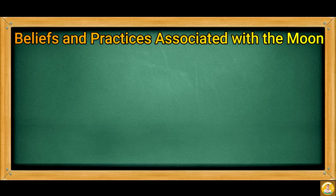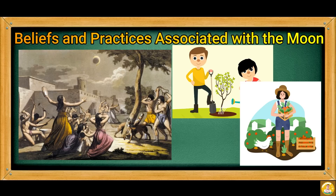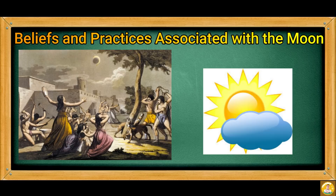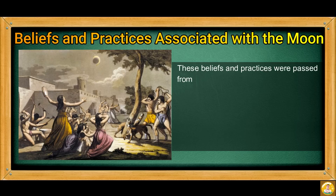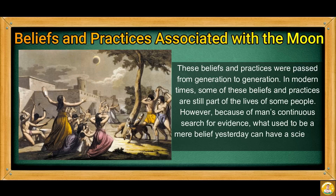We come now to the beliefs and practices associated with the moon. The phases of the moon are often associated with superstitious beliefs. During ancient times, people believed that the moon has a big influence on their lives. They used the moon as a guide — it told them when to plant and when to harvest, and also gave them signs about the weather. These beliefs and practices were passed from generation to generation, and in modern times, some are still part of the lives of many people.